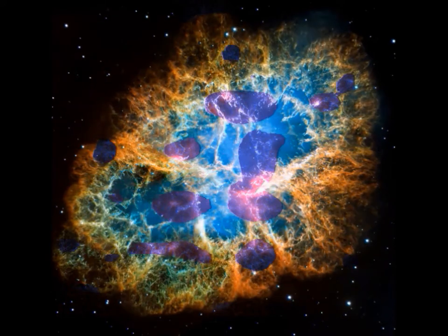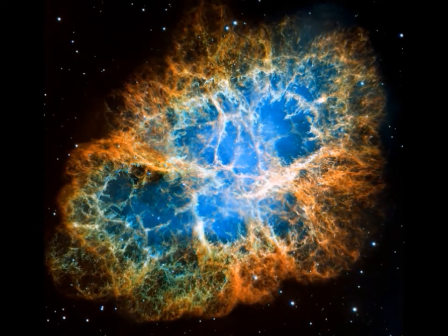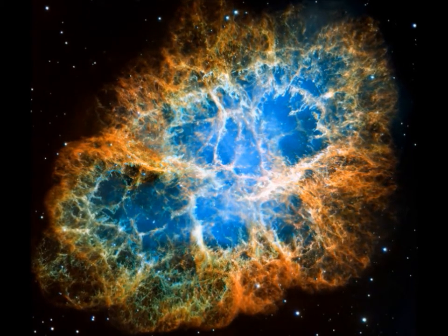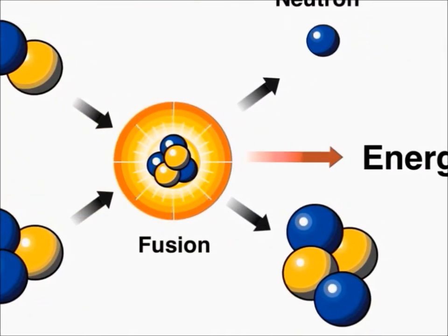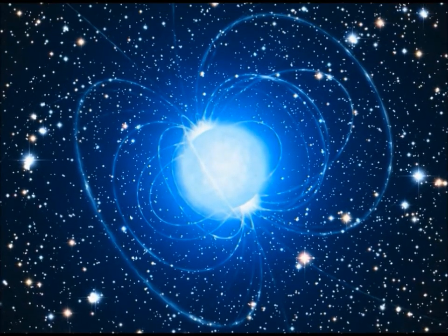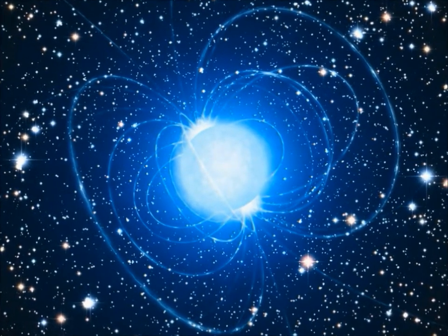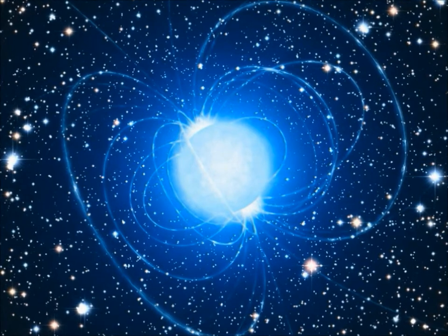It forms a supernova that explodes outwards in a giant shockwave. This releases energy up to the total amount that the star has released in the rest of its life. What is left behind is called a neutron star, which is exceedingly dense, far more so than the density of our Earth.